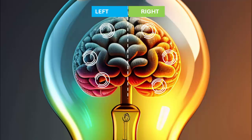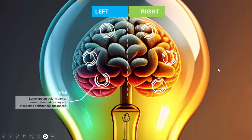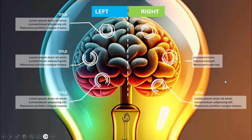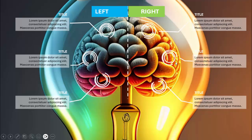In today's tutorial, I'm going to show you how to create a six-options brain infographic slide in PowerPoint. I've downloaded this image from unsplash.com — you can see the brain inside a light bulb. I've divided the brain into the left and right sides and added six options. When you click, this option rotates and gives you details about each one, and it keeps on rotating.